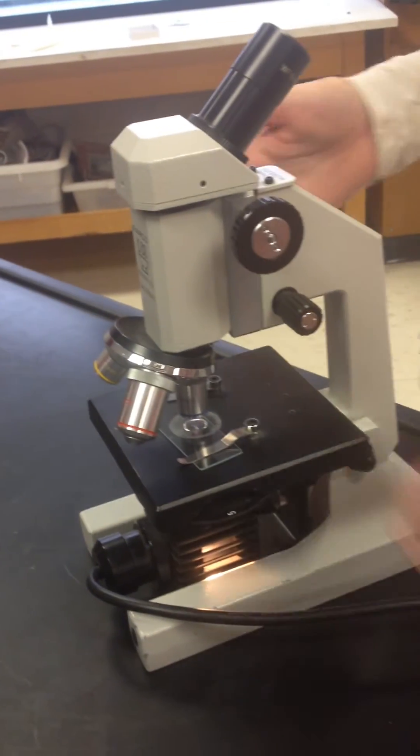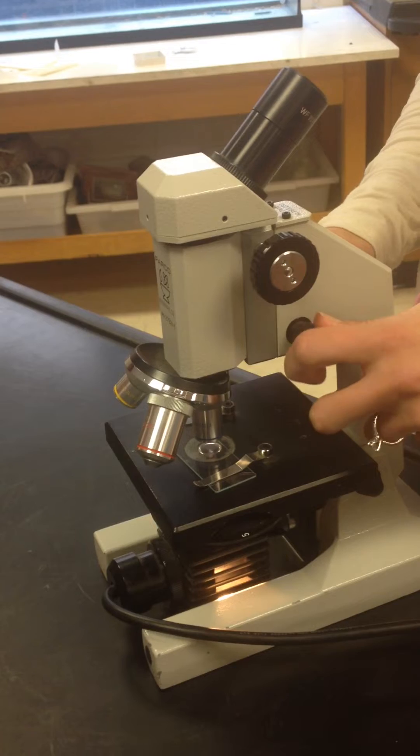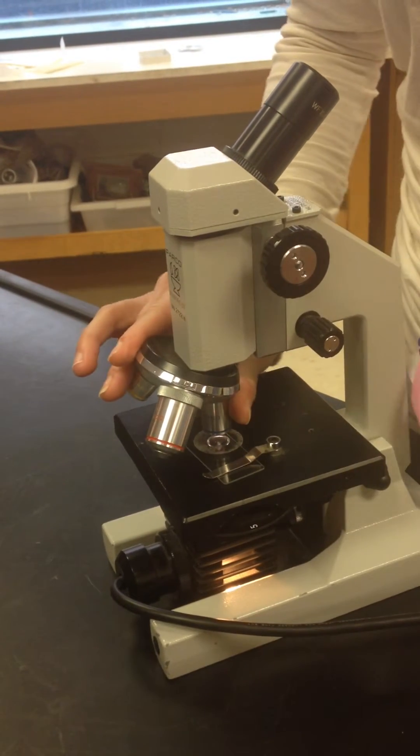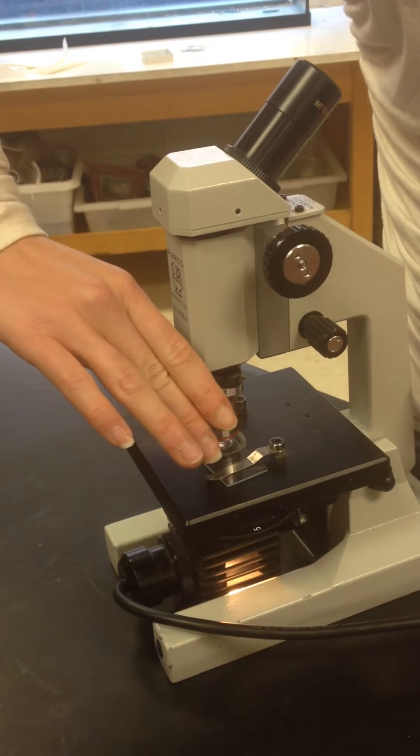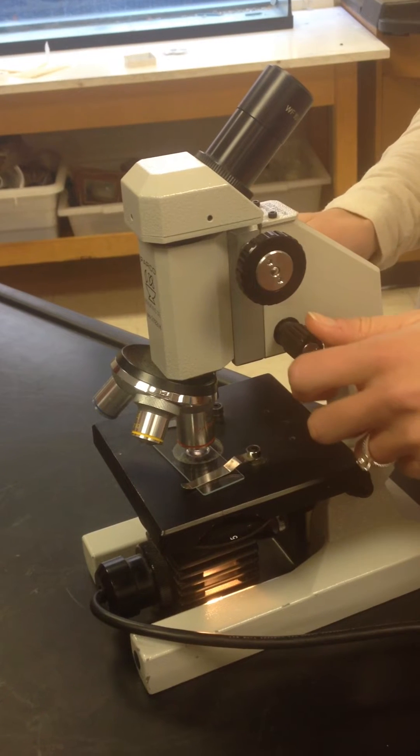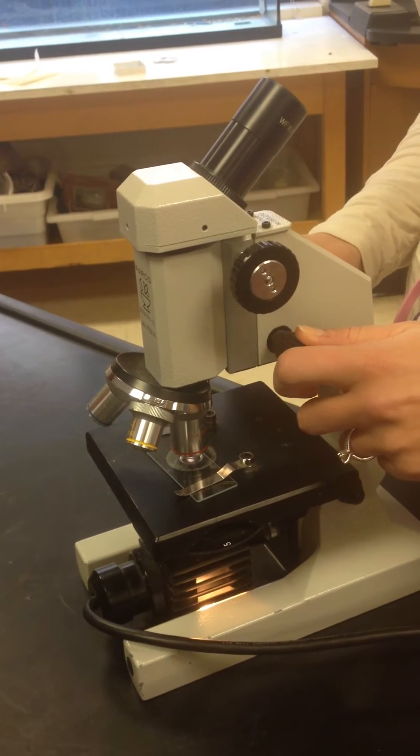You then are going to only use the fine adjustment knob to bring it in and out of focus until it's in perfect focus and then rotate once again up to high power. Once it's in high power, you then again can make those last fine-tuned adjustments with the fine adjustment knob.